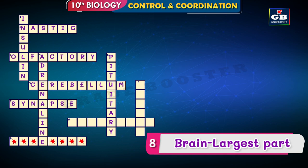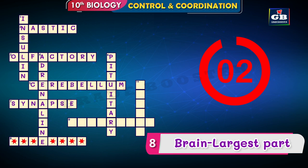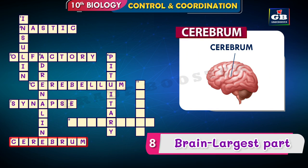Eight across — brain, largest part. The hints are: brain, largest part. What is the largest part of the brain? The answer is cerebrum. Cerebrum is the largest part of the brain.